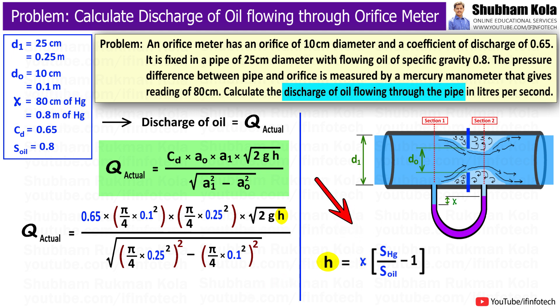The formula of h will be x times specific gravity of heavier fluid upon specific gravity of lighter fluid minus 1. Here x is 0.8 meter of mercury. The heavier fluid is mercury and we know its specific gravity is 13.6. And here lighter fluid is oil, whose specific gravity is given in the problem as 0.8.